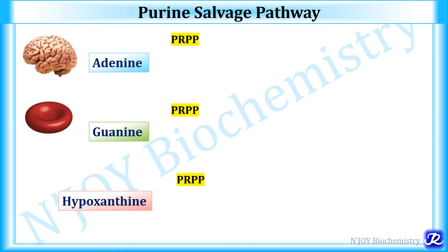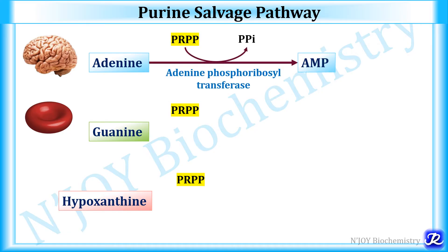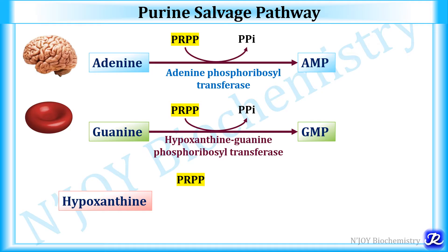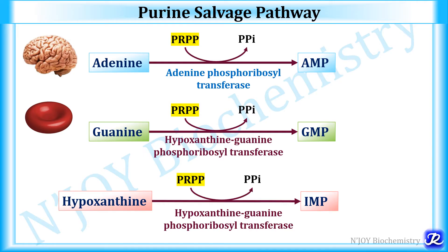Adenine is salvaged and converted to AMP (adenosine monophosphate) by the enzyme adenine phosphoribosyl transferase. Guanine is converted to GMP by hypoxanthine-guanine phosphoribosyl transferase. In all these reactions, pyrophosphate is released and further degraded to form inorganic phosphate, making the reactions irreversible. This purine salvage pathway ensures recycling of purines formed by degradation of nucleotides, and is very important for brain and erythrocytes.